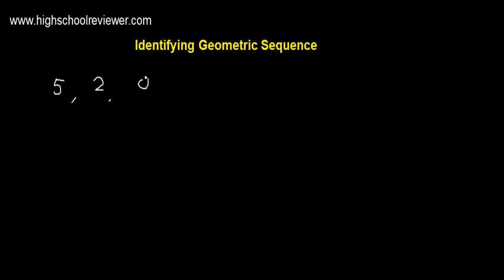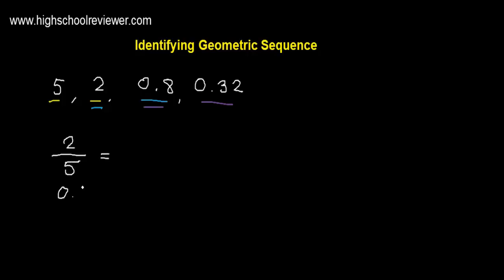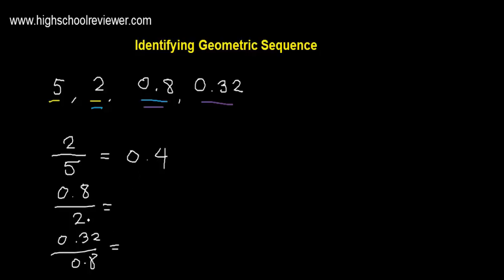For our last example, we have the set of numbers: 5, 2, 0.8, and 0.32. We identify two consecutive pairs: 5 and 2, then 2 and 0.8, and then 0.8 and 0.32. We then get the ratio of the consecutive numbers. We have 2 over 5, 0.8 over 2, and 0.32 over 0.8. 2 divided by 5 gives us 0.4. 0.8 divided by 2 gives us 0.4. And 0.32 divided by 0.8 gives us 0.4.